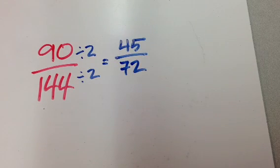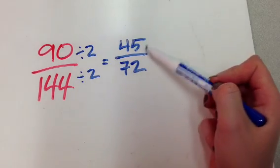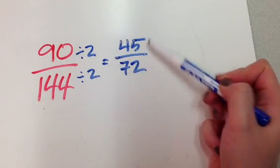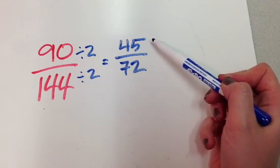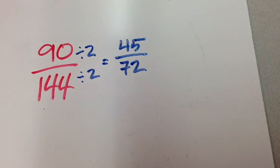Now I have to look at this and try to figure out what goes into both of those. Well, I know that two can't work, right? Because forty-five is odd. It would go into seventy-two, but I have to divide the same thing out of both of these. It's not going to work to reduce this fraction. What about three, though?